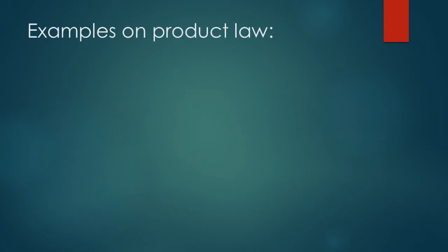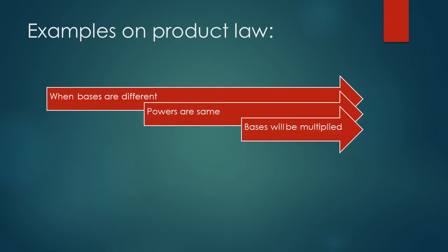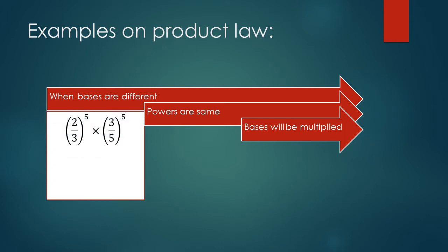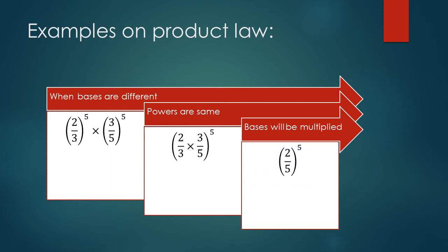There is an example on product law. When bases are different, powers are same. Bases will be multiplied with each other. Powers remain same. 2 upon 3 to the power 5 into 3 upon 5 to the power 5. Bases are multiplied with each other. And by simplifying, we get 2 upon 5 to the power 5. 3 and 3 cancel out and 2 and 5 remain.